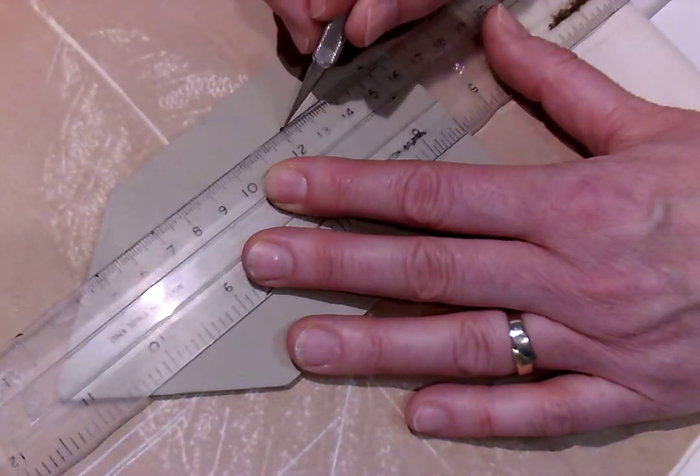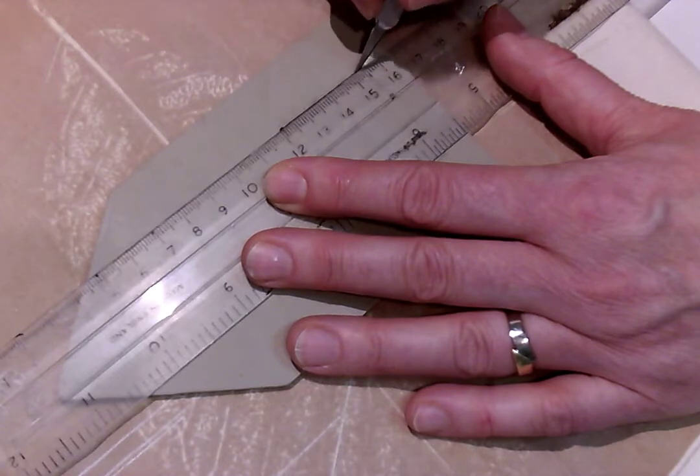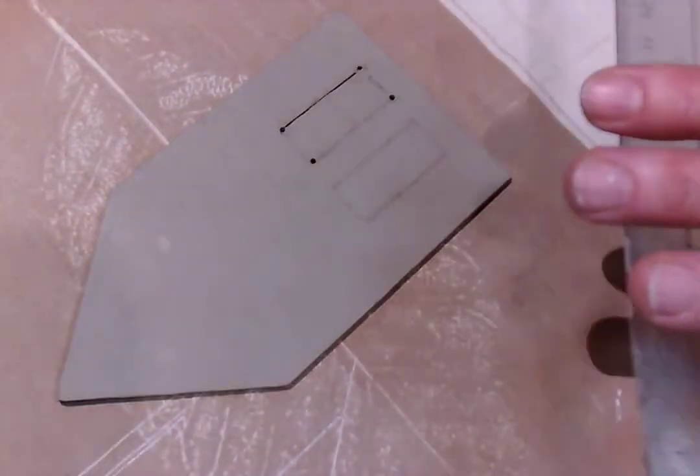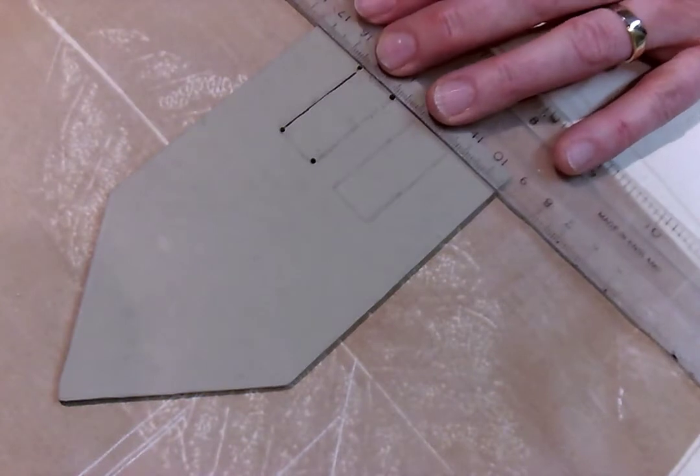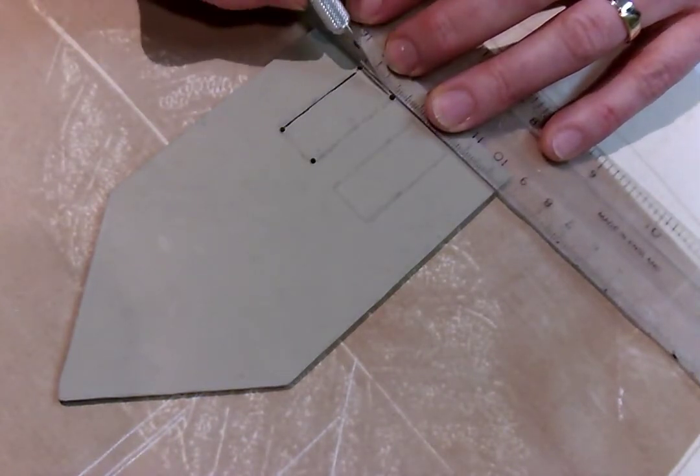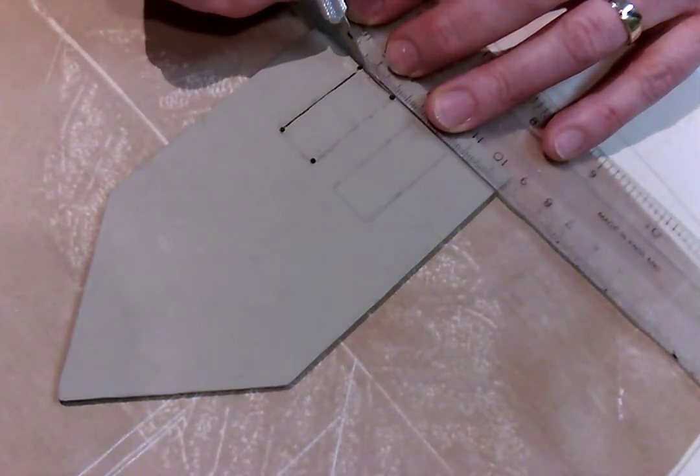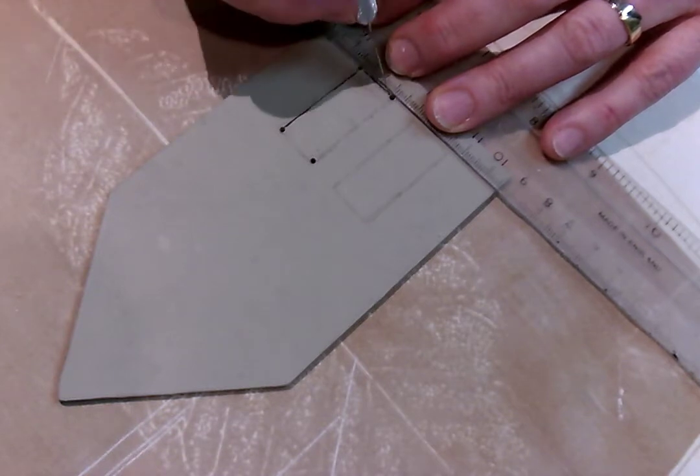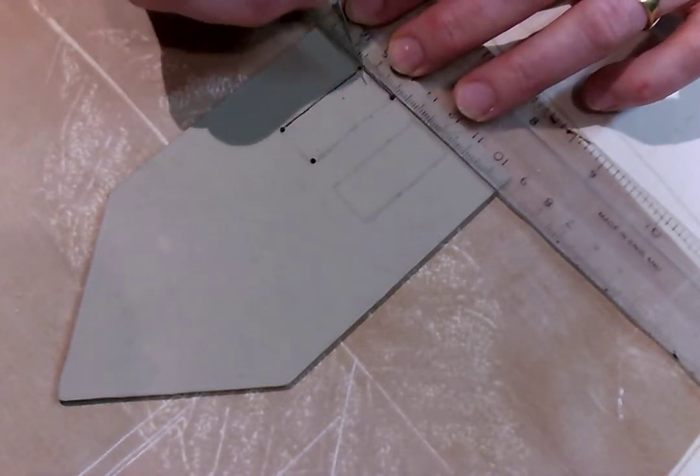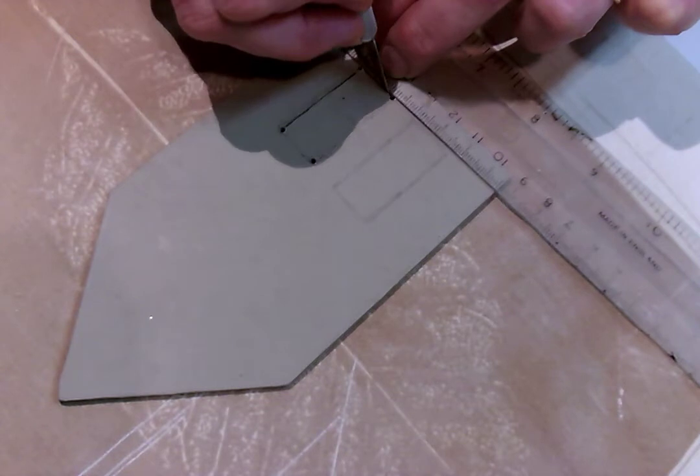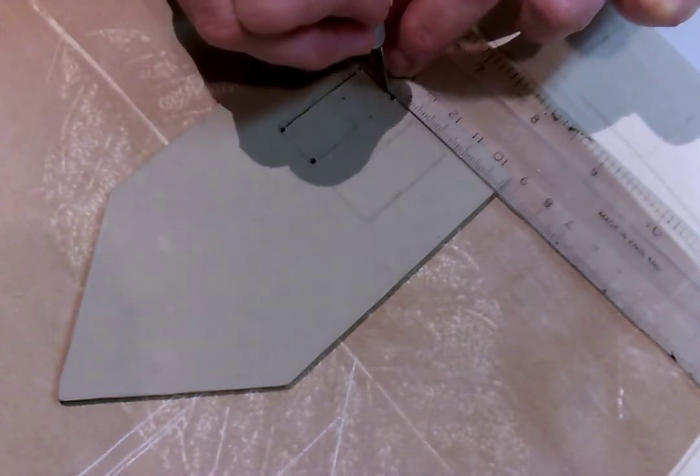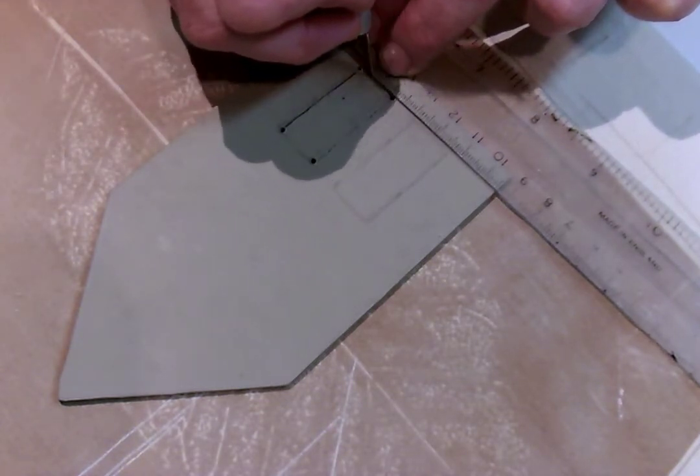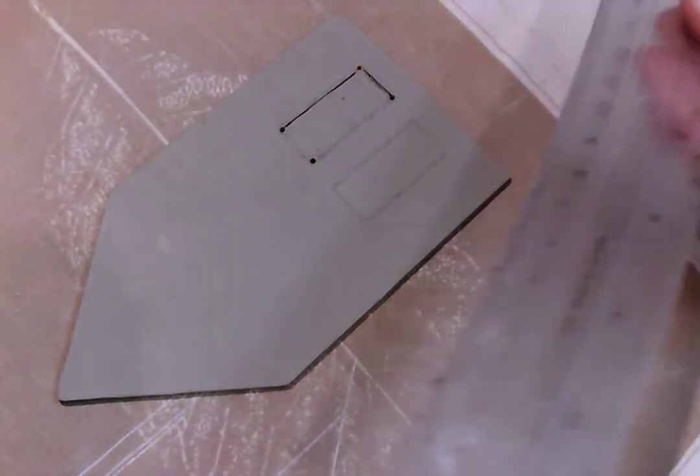As you can see I'm being quite careful not to cut beyond the circle. Score from the edge of the circle to the edge of the other one and then go deeper on the second pass and deeper again until you can feel the tip of the scalpel touching the material underneath.